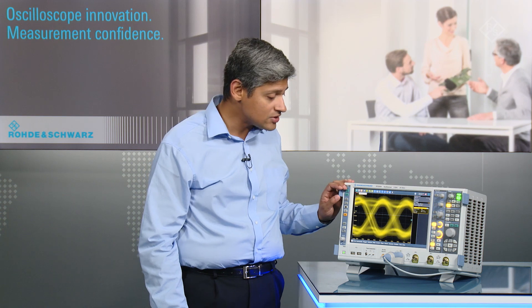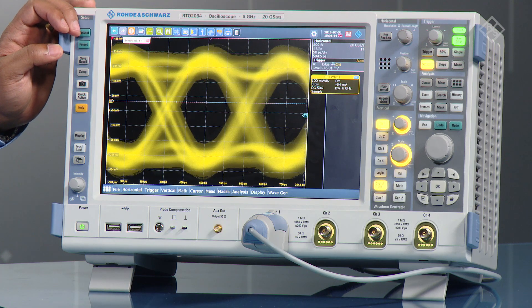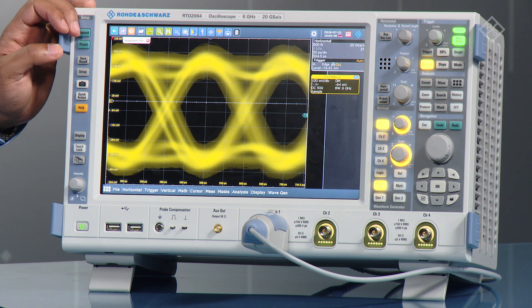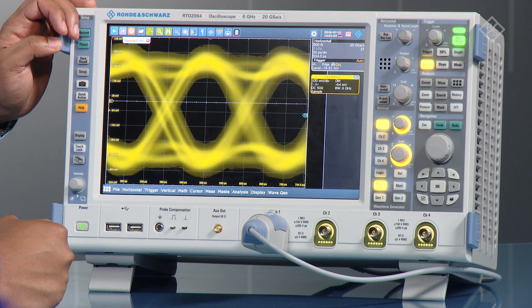Now in this example I've got a USB 3.1 Gen 1 signal, so this is a 5 gigabit data stream that's coming through, and as you can see here I've set up an eye diagram test for this data that's coming in.